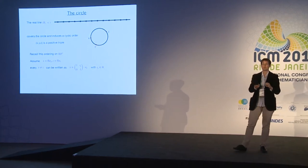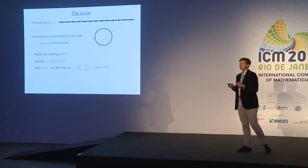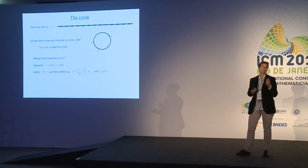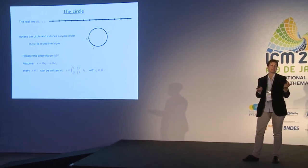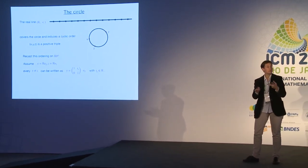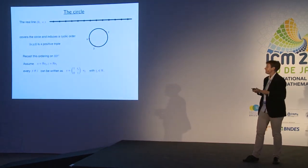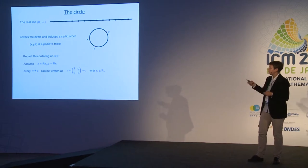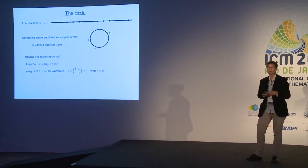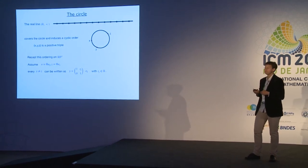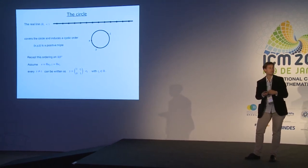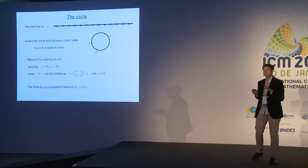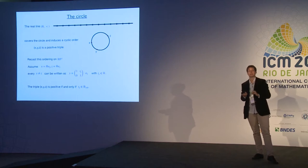Thinking of the circle as the projective line, I can assume that my line X is just the line formed by the second standard basis vector of ℝ², my line Z is formed by the first basis vector of ℝ², and any point Y not equal to Z can be written as the image of the 2×2 matrix (1, T_Y; 0, 1) times e₂, with T_Y a real parameter. The triple is positive if and only if this parameter is a positive real number.